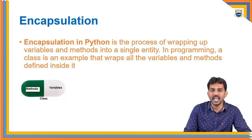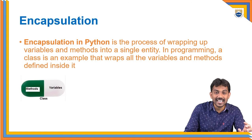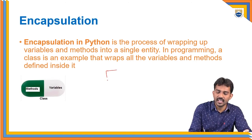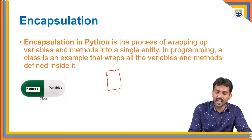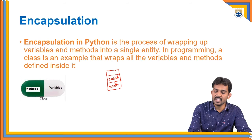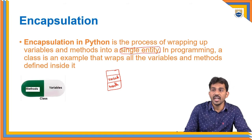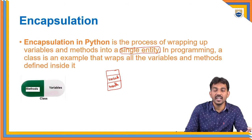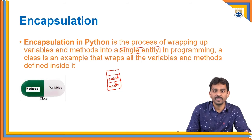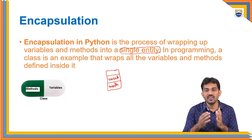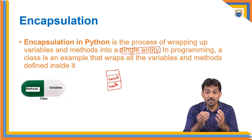Encapsulation is the process of wrapping up variables and methods into a single entity. A class is a blueprint of an object — a real-time entity. Every object contains variables and methods. In programming, a class is an example that wraps up all variables and methods defined inside it. Encapsulation is possible with the object-oriented concept.